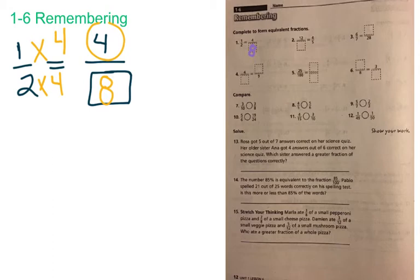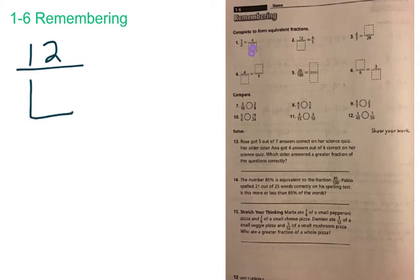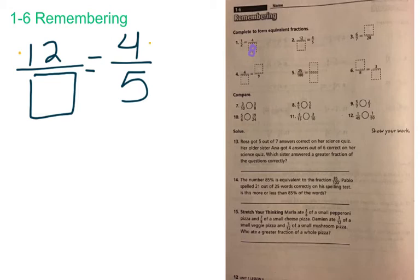You can also have ones that have a divisor. That one was a multiplier. If we look at number 2, it reads 12 over some number — we don't know what this number is yet — is equal to 4 over 5, or 4 fifths. We have to figure out how we get from 12 to 4, and we know that we have to divide here. 12 divided by some number is equal to 4, and we know that 12 divided by 3 is equal to 4, so it's a divisor of 3, and we have to have a divisor of 3 on the bottom.